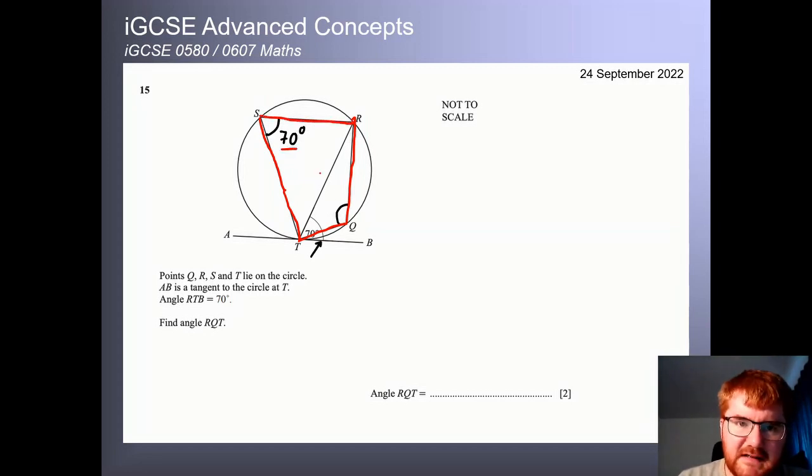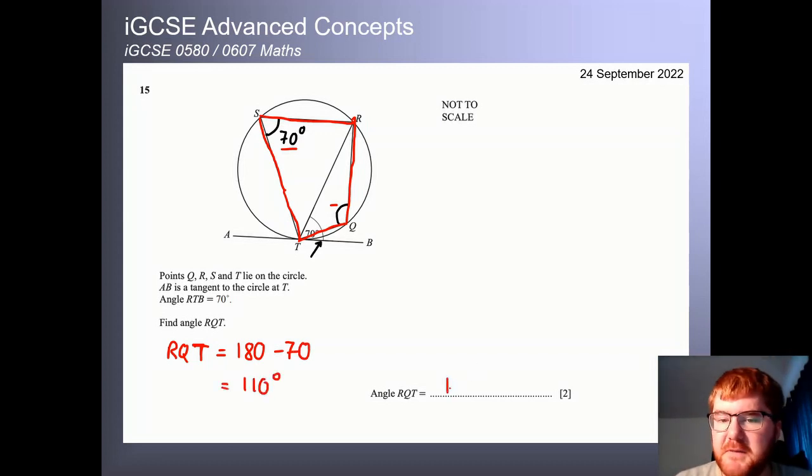If you want more information on circle theorems, check out the video just above me. But we are going to use what's called cyclic quadrilaterals. Now, what does that mean? Well, it means that this angle and this angle here add up to 180. So to work out the angle RQT, there we are. We do 180 minus the 70, giving us 110 degrees.